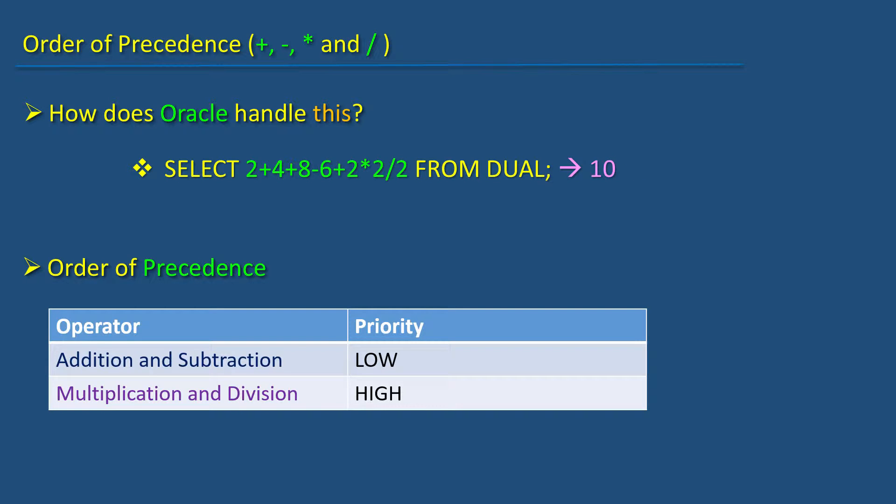In mathematics, addition and subtraction are always treated with same level of priority. Let us call this priority as low. Multiplication and division are of same priority too. Let us call this priority as high.